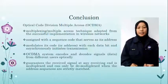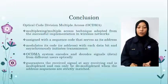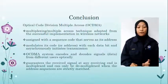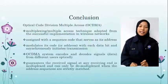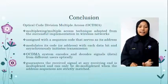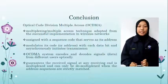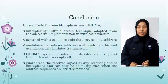This modifies the signal's spectral appearance in a way recognizable only by the intended receiver; otherwise, only noise-like bursts are perceived. OCDMA systems encode and decode signal data from different users optically. The received signal at any decision point is multiplexed and can only be de-multiplexed when the exact sequences are strictly matched. That's all for me. Thank you.